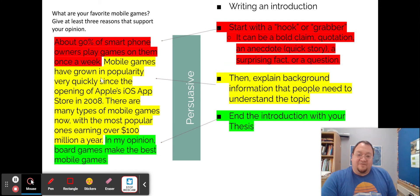So in this case, I'd say mobile games have grown in popularity very quickly since the opening of Apple's iOS App Store in 2008. There are many types of mobile games now, with the most popular ones earning over $100 million a year. So these are just some things that are interesting to know about this topic. And now when someone's reading my article, they understand that there are different types of mobile games. They are a big business, they earn a lot of money, and they're very new—they only really got popular after 2008.